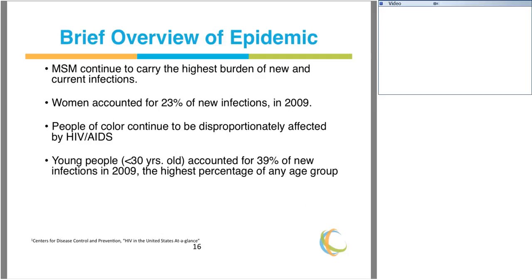MSM continue to carry the highest burden of new and current infections in the United States. Women accounted for 23% of new infections in 2009, and people of color continue to be disproportionately affected by HIV AIDS. Young people less than 30 years old accounted for 39% of new infections in 2009 — the highest percentage of any age group in the United States.